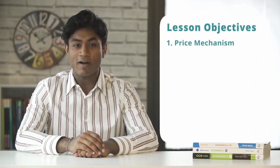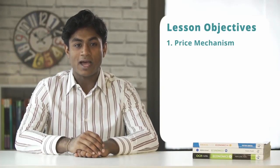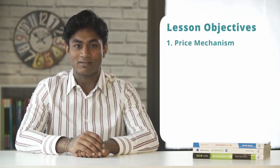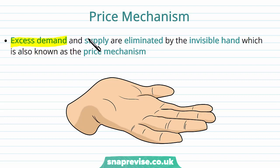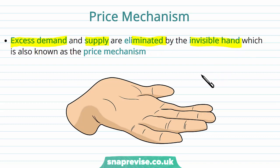Hi guys, in this video we'll be looking at the price mechanism and then we'll be finishing off with a summary. The price mechanism is going to be quite useful when we're talking about situations in which the market is experiencing excess demand or excess supply, as through the price mechanism these are eliminated because of the invisible hand.